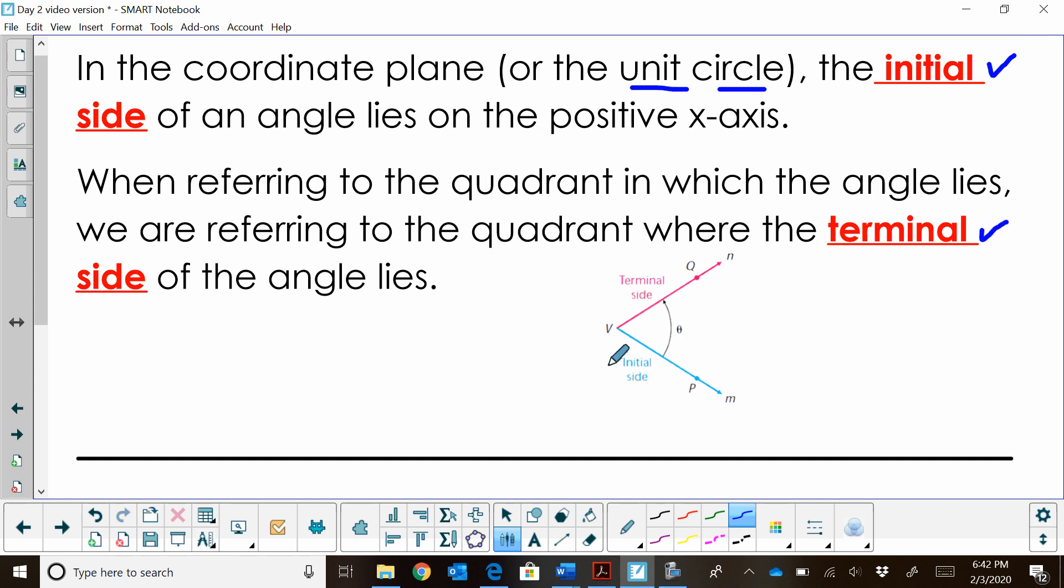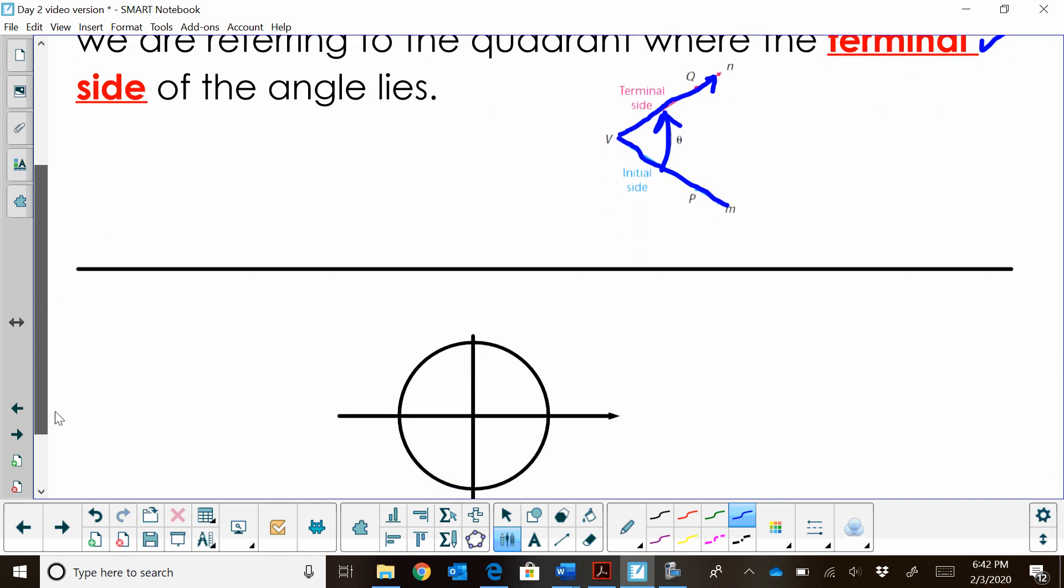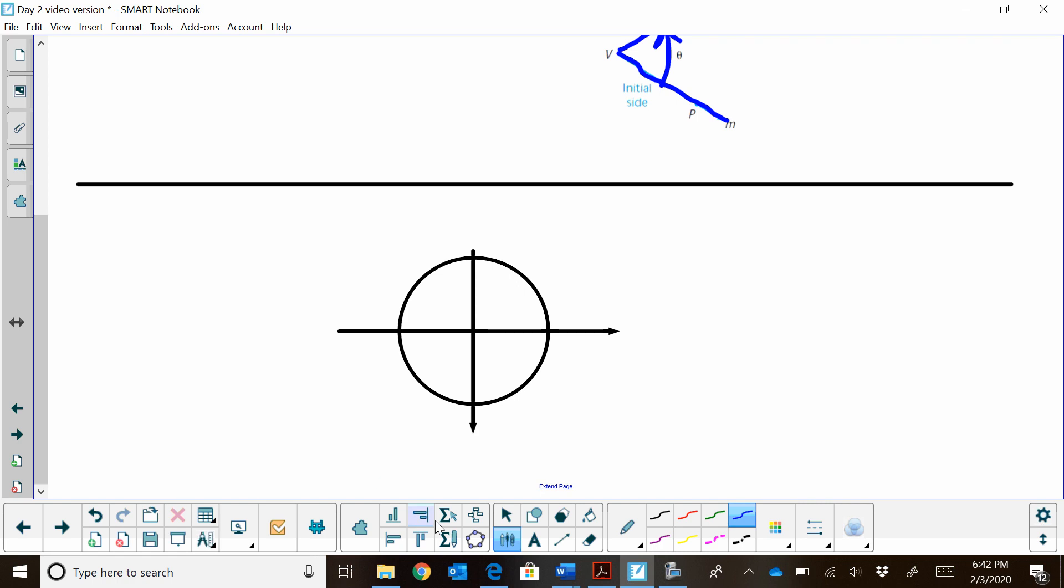So as we're looking at an angle, the initial side is obviously where an angle starts. We're going to use an arrow to represent a direction, and then we're going to have a second ray representing the terminal side. We're going to be referring to quadrants. There are four quadrants in the Cartesian coordinate plane, and we're going to look at the initial and terminal side. So the initial side is going to start right here on the positive x-axis. So we're always going to start here.